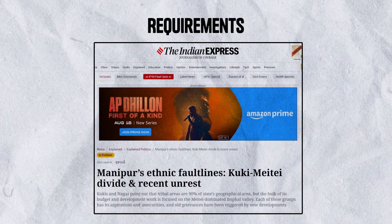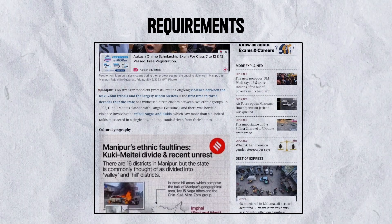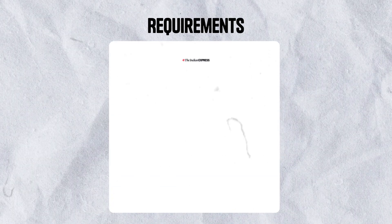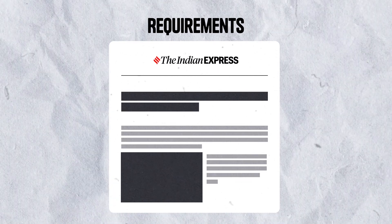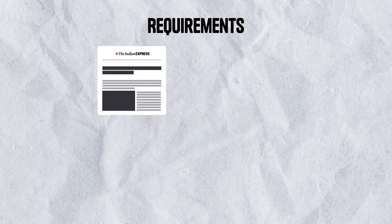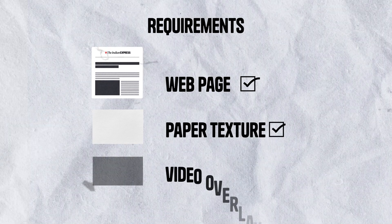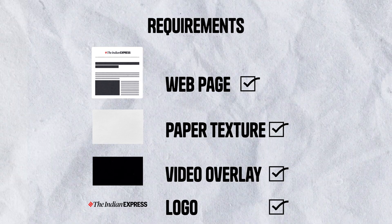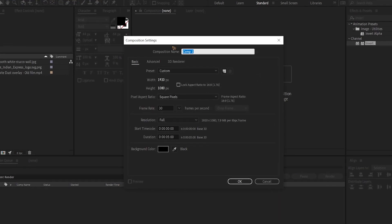What we'll be needing here is the news article from the Indian Express, and we're gonna copy some of this text and information from this. We're gonna build the entire webpage in After Effects, so we'll be needing textures and overlays — which I have already downloaded from the internet — a white paper texture, a dust overlay, a PNG logo for the Indian Express. Let's create a new composition and build this entire thing.